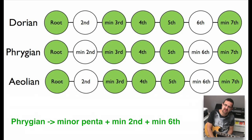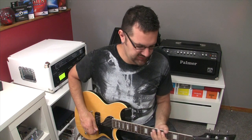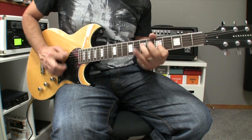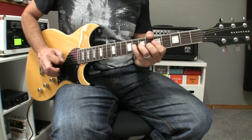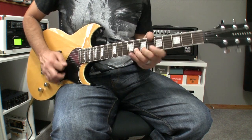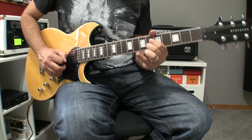The Phrygian scale — same thing. Just play the minor pentatonic scale, then add the two characteristic notes of the Phrygian: a minor second and a minor sixth. Here's how it sounds — I'll play a little minor pentatonic and land on the minor second, then do the same and land on the minor sixth. And I'm playing Phrygian.